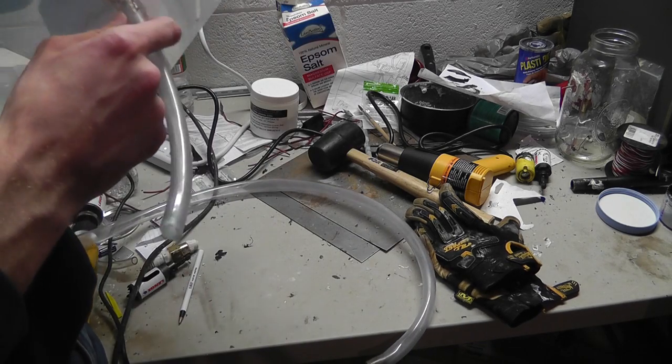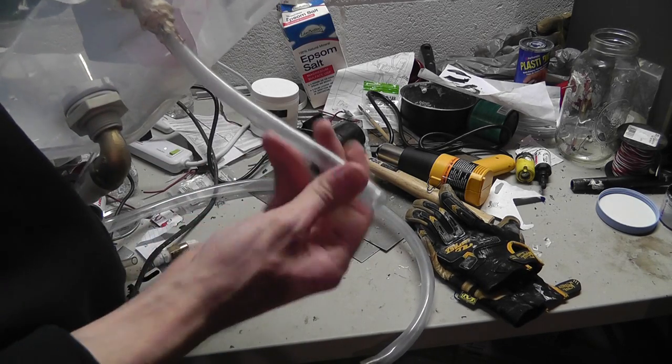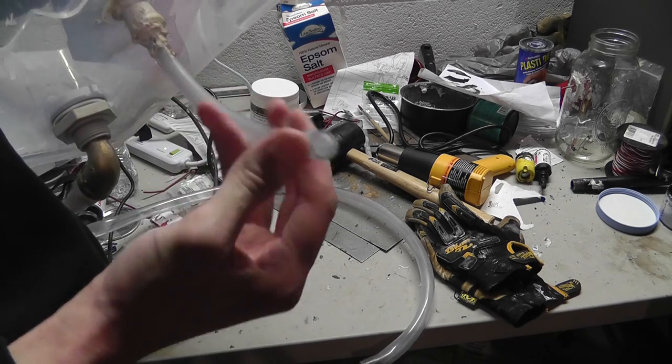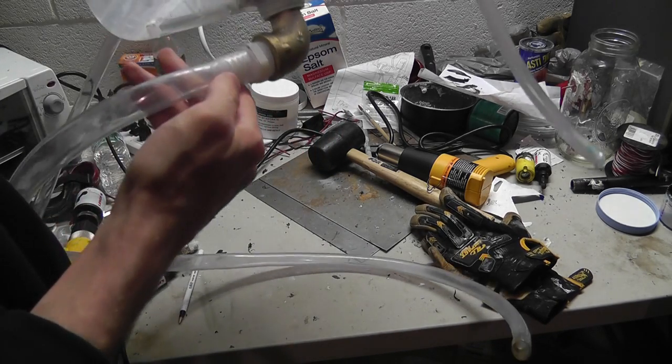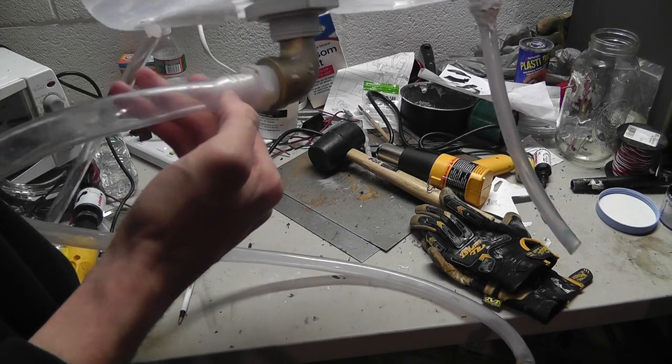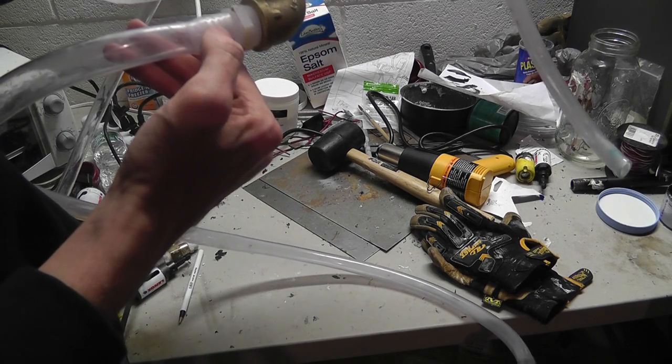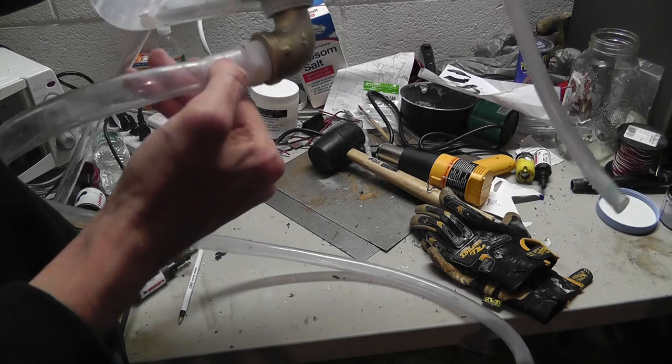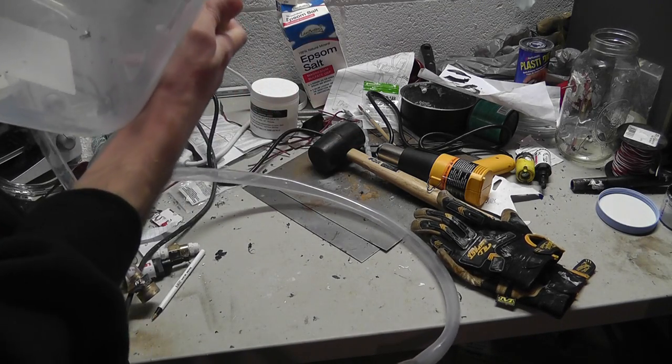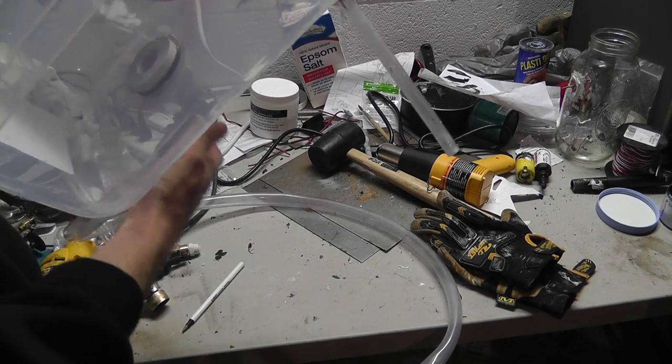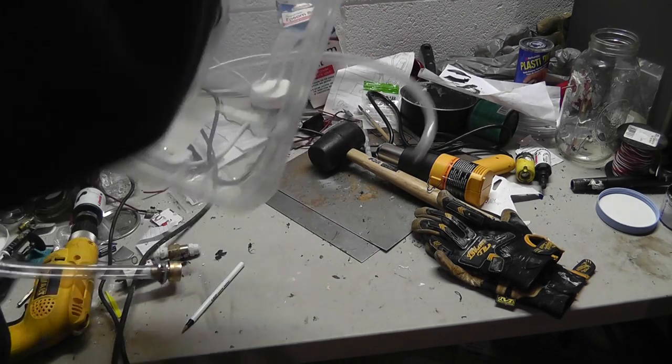And this right here, the barb would be like three-eighths inch, because this is a three-eighths inch ID. And this would be here would be once again, a five-eighths inch ID, a five-eighths inch barb for a five-eighths inch ID tube. I'm a little confused too. Sorry about that.